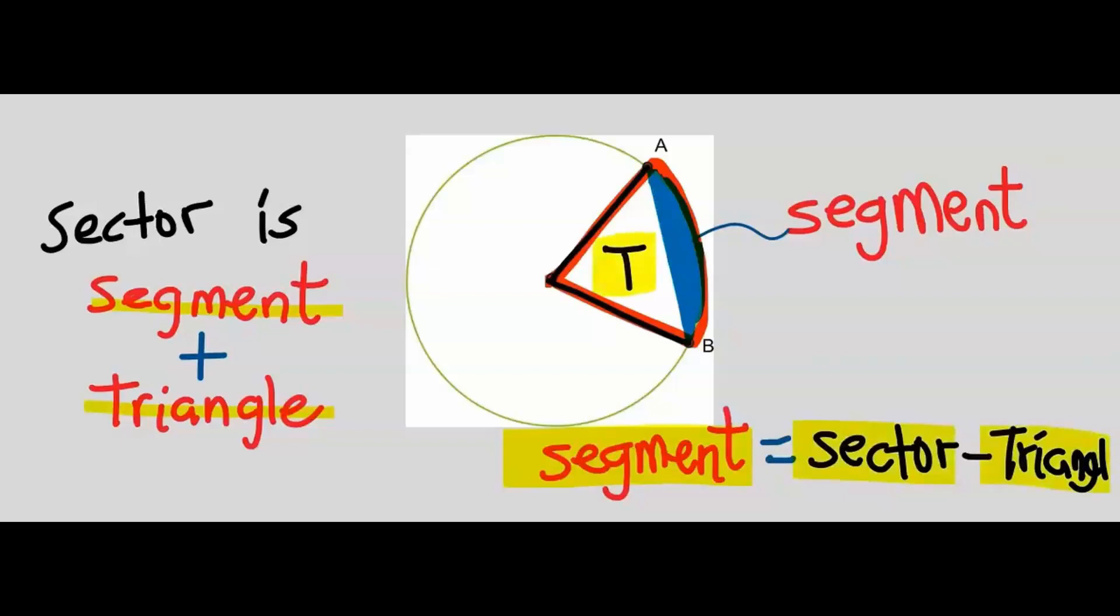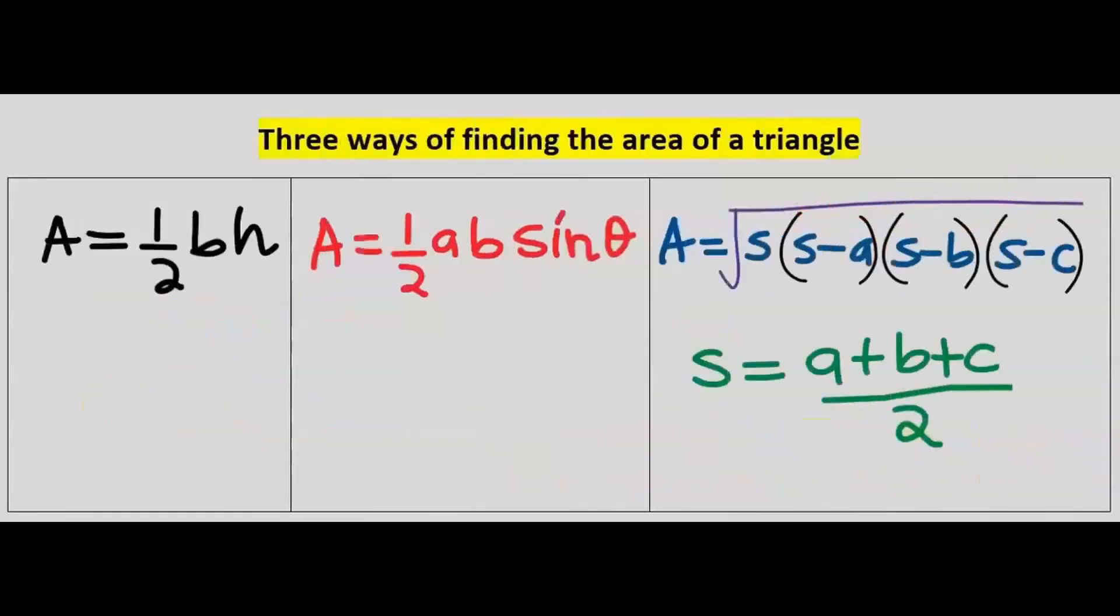There are three ways of finding the area of a triangle. The first one is when you have the base and the height. Next is when two sides are given and an angle.